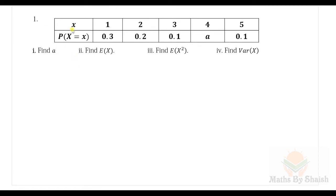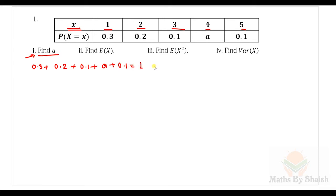Let's start with some examples. In question one, for X taking values 1, 2, 3, 4, and 5 — since they are distinct discrete random variables — we need to find the constant 'a'. Since it is a discrete random variable, the sum of all probabilities must equal 1. So: 0.3 + 0.2 + 0.1 + a + 0.1 = 1, giving 0.7 + a = 1, and therefore a = 0.3.